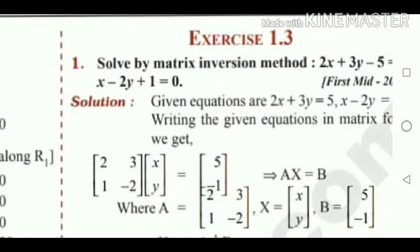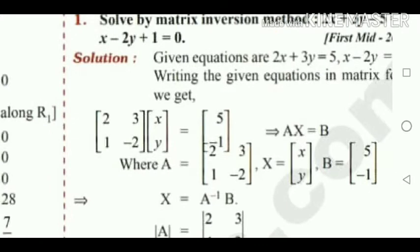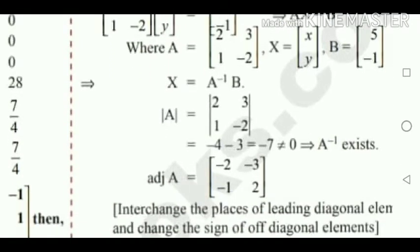If minus 5 goes to that side, it becomes plus 5. Likewise, plus 1 goes to the right side of the equation, it becomes minus 1. So write 5 and minus 1 on the right side of the equation. This is in the form of AX = B. Here, A equals 2, 3, 1, minus 2; X equals x, y; and B equals 5, minus 1. In order to find the value of the variable, x equals A inverse B. To find A inverse, the first step is to find the determinant of A. Then find the adjoint of A. Apply the formula: A inverse equals 1 by determinant of A into adjoint of A. These three rules are followed in order to find A inverse.